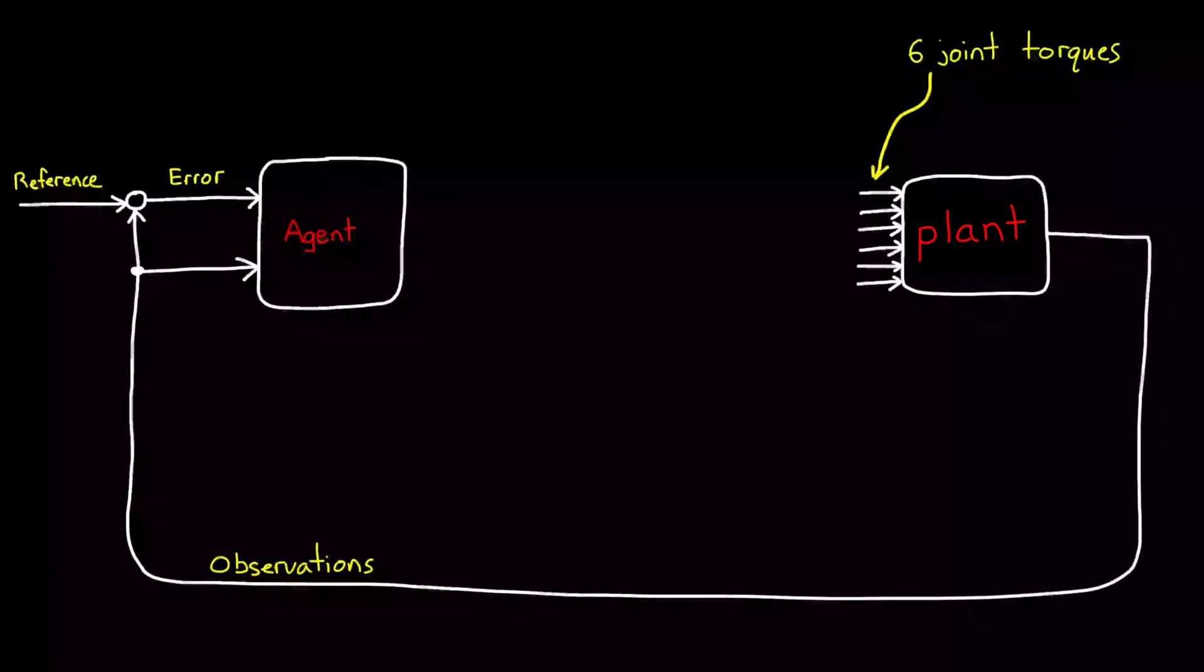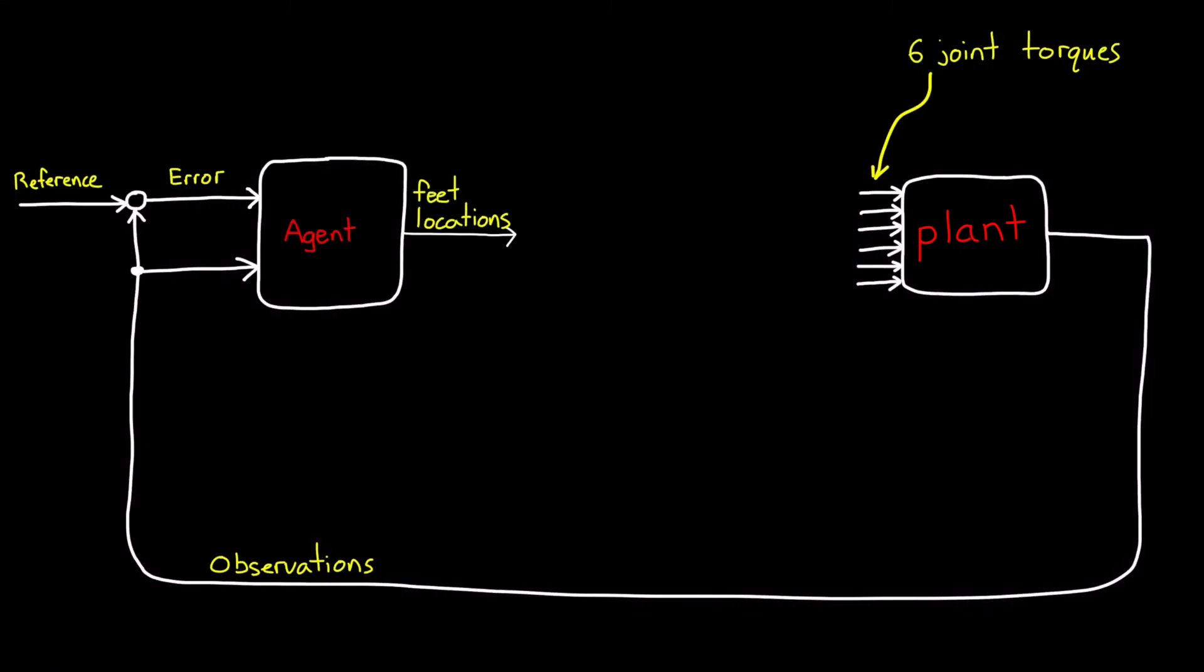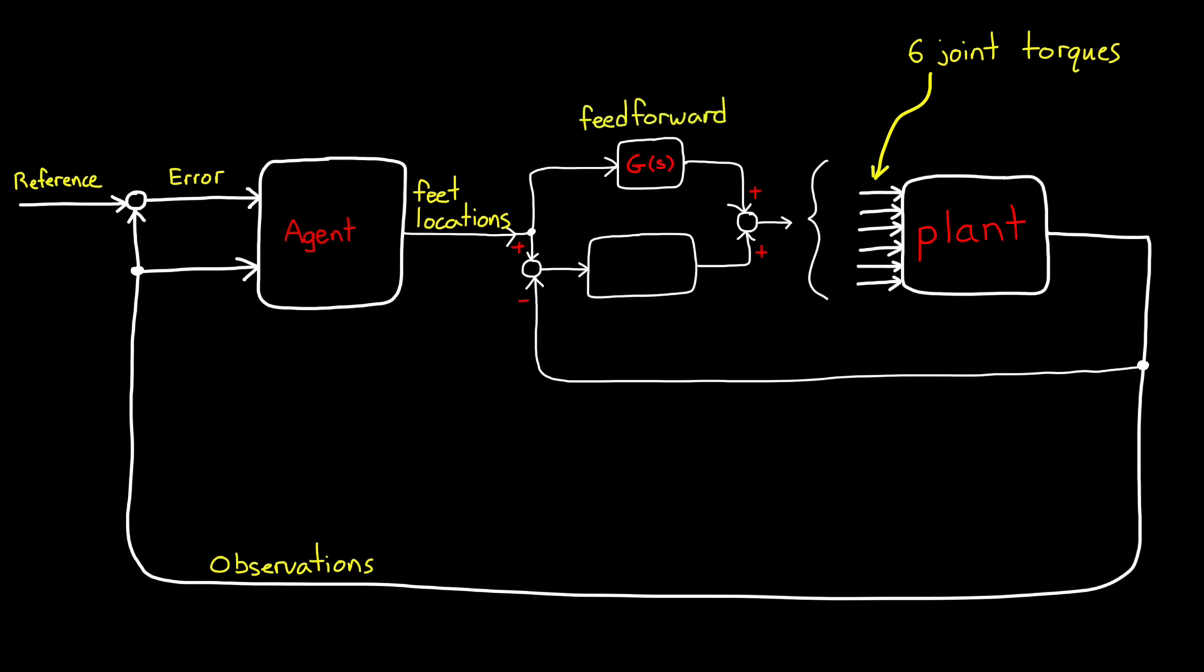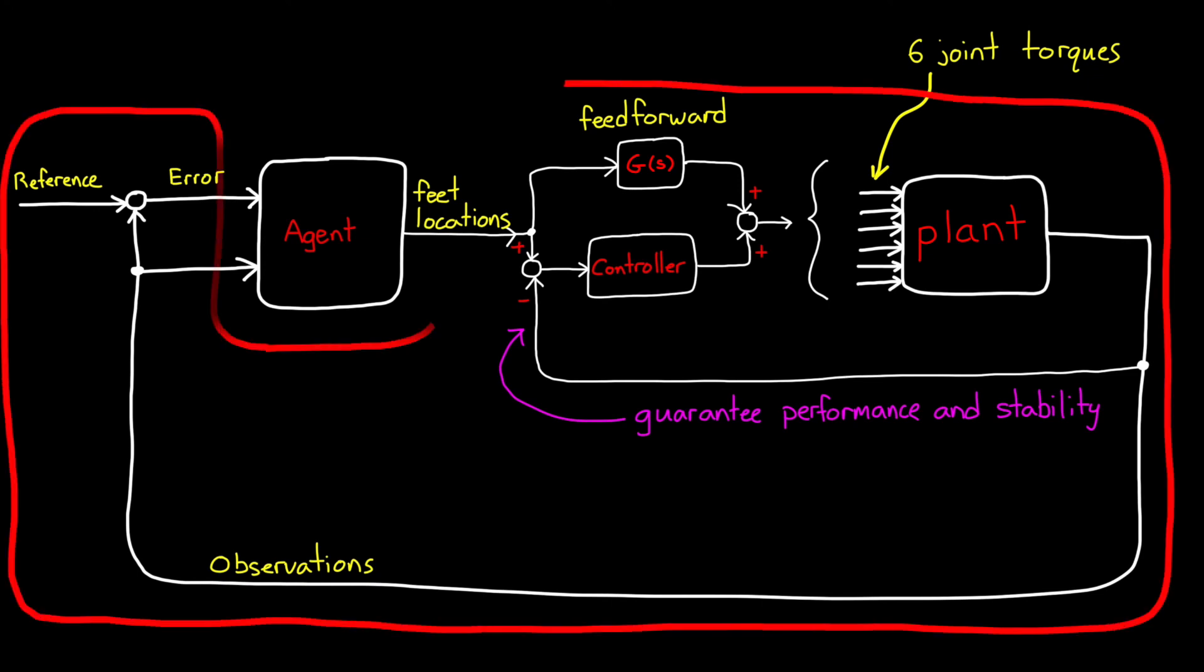We can also remove low level functionality from the agent. For example instead of the actions being the low level torques for each of the six joints the agent could just learn where to place its feet on the ground. So the action would be place left foot at some location in the body coordinate frame. This action could be the reference command for a lower level traditional control system that drives the joint motors. You know something that might feed forward a torque command based on your knowledge of the dynamics of the system and then feed back some signal to guarantee performance and stability. And this is beneficial because we can use our specific domain knowledge to solve the easy problems and that's going to give us insight and control over the design and then we can reserve reinforcement learning for the problems that are more difficult.